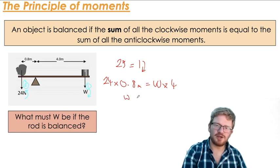So if I rearrange that equation, hopefully you can see that what I need to do is divide both sides by 4 in order to get W by itself. So W becomes 24 times 0.8 divided by 4.